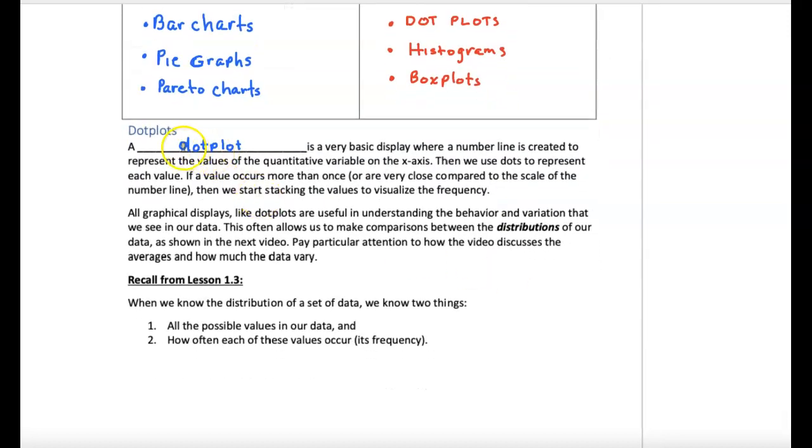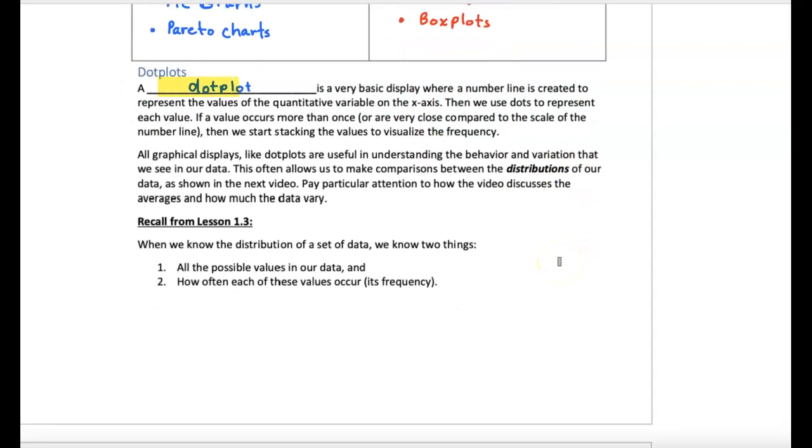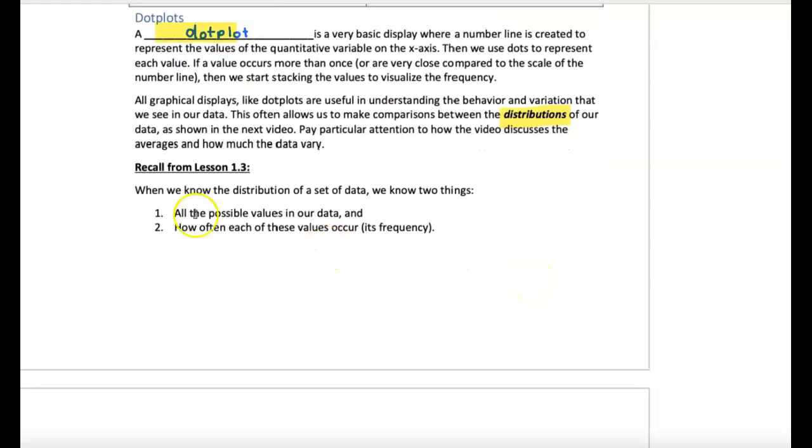Dot plots are our first form. You can go ahead and read what a dot plot is, but I'll show you what a dot plot is. Again, a dot plot helps us see a distribution. The distribution is all the possible values in our data. How often do they occur?